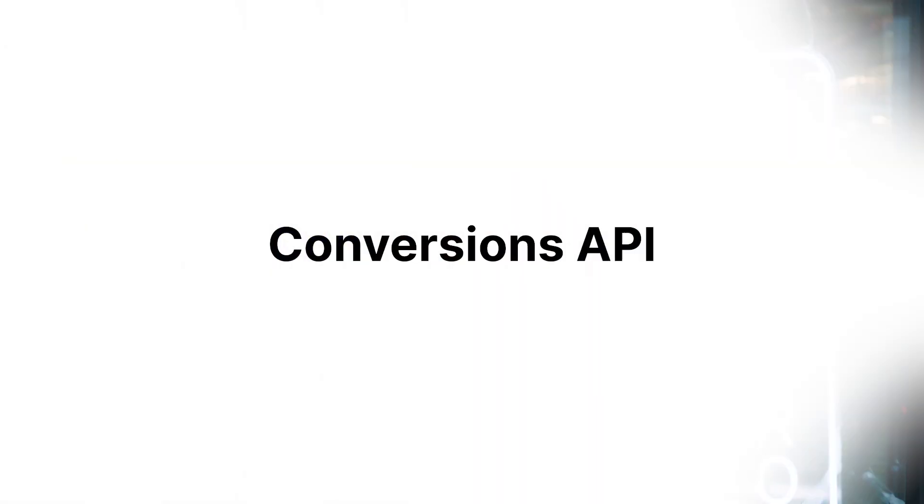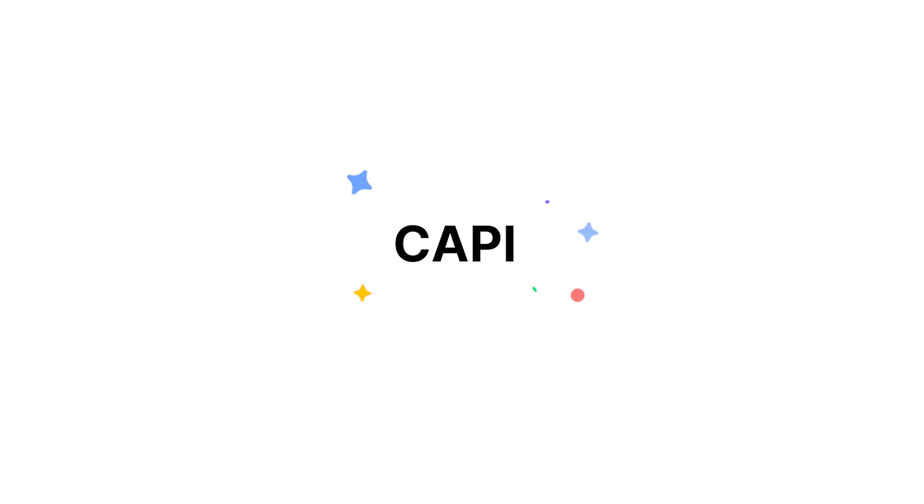Are you running meta ads and want to double your high quality leads? Then you'll need Conversion API, or for short, we call it Cappy. Cappy will help you reduce spam leads by up to 50%, ultimately doubling the number of high quality leads coming from your ad campaigns. Without Cappy, your ads will never learn and your lead quality will not improve. Let's dive right in.